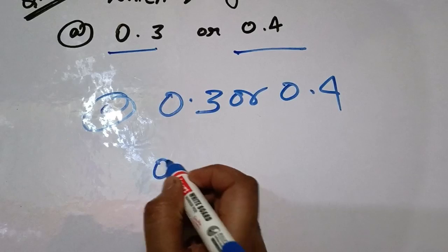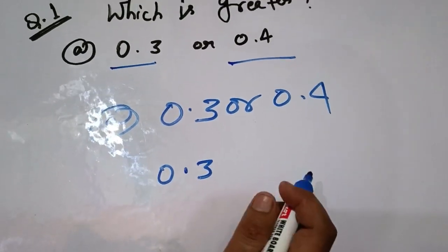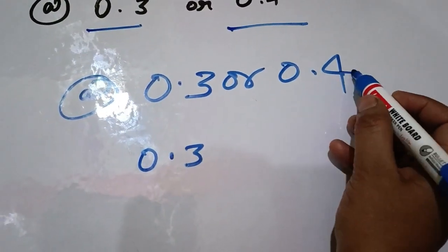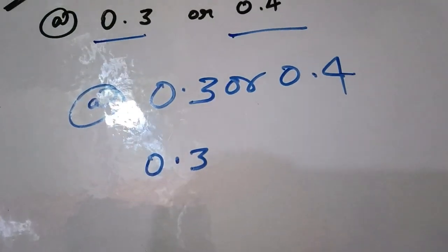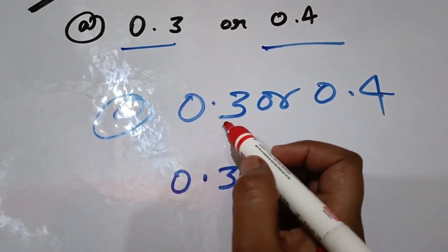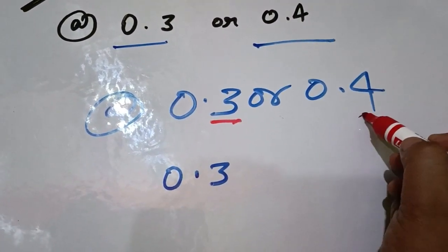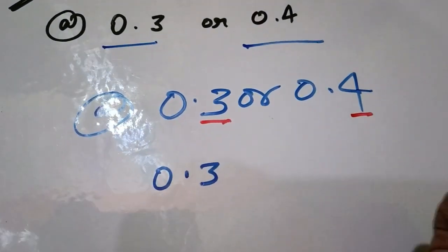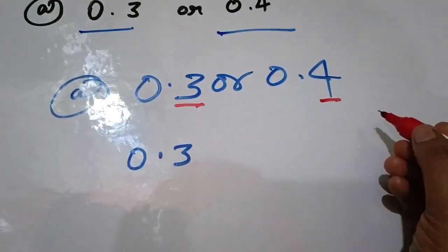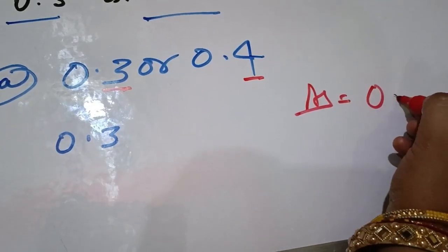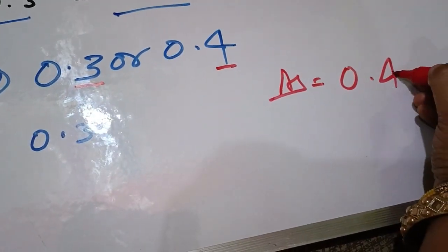What do we have to do here? If you have 0.3, how will you know which is greater or smaller? It is simple. If there is 3 and there is 4, then 4 is greater than 3. So we can write that our answer will be 0.4. This is greater.